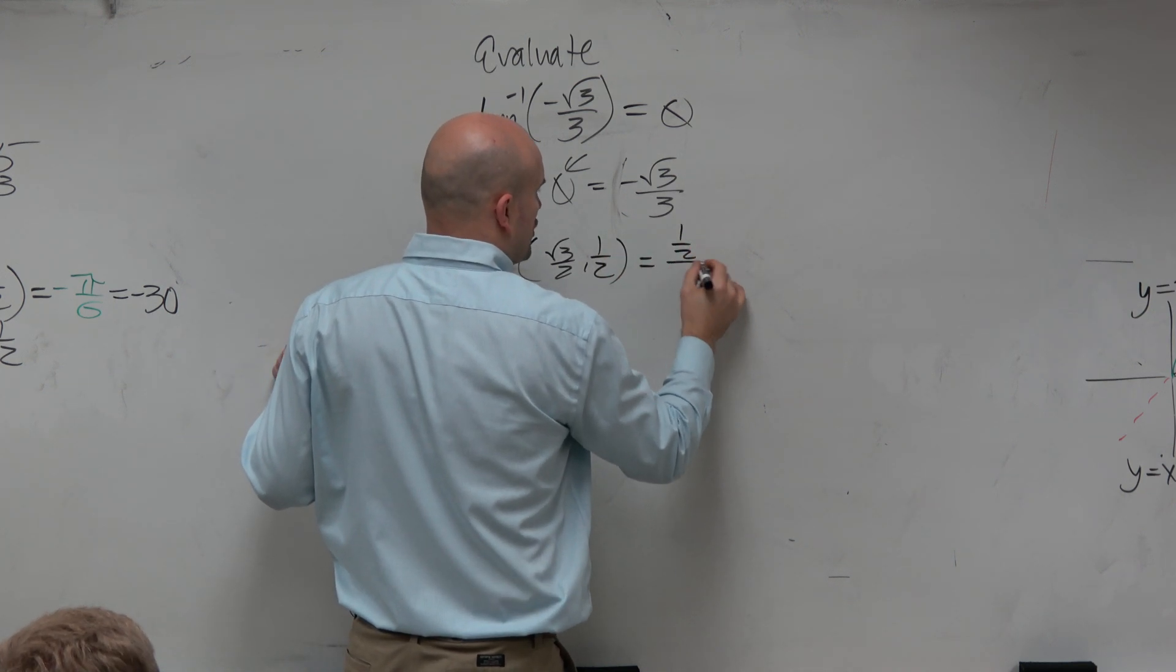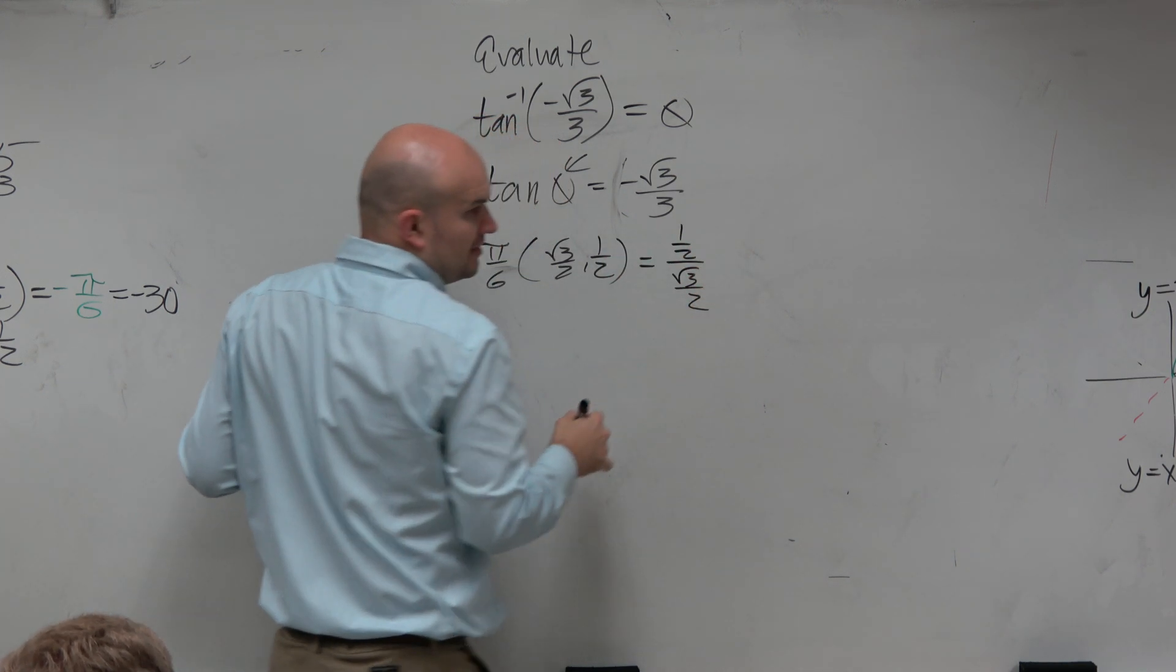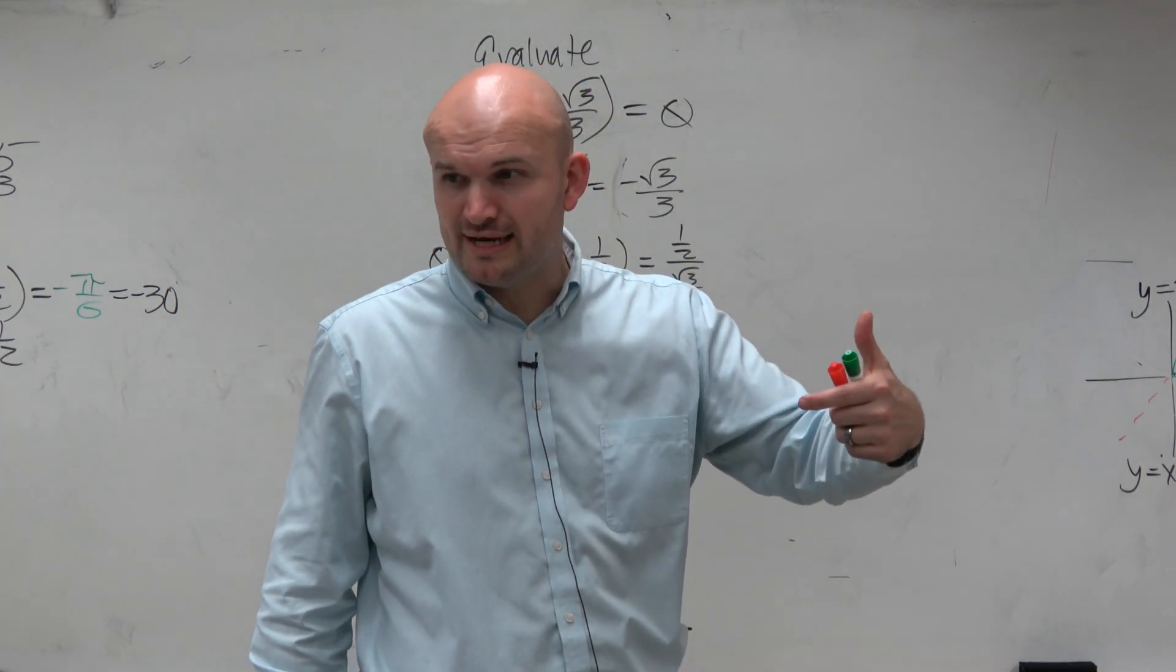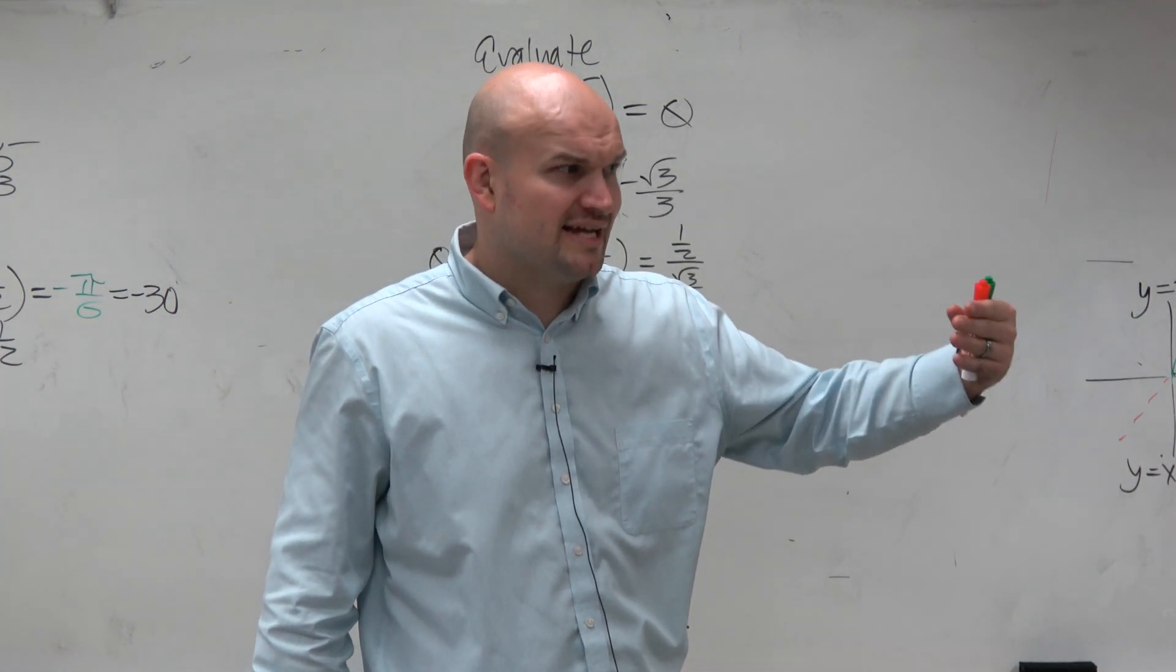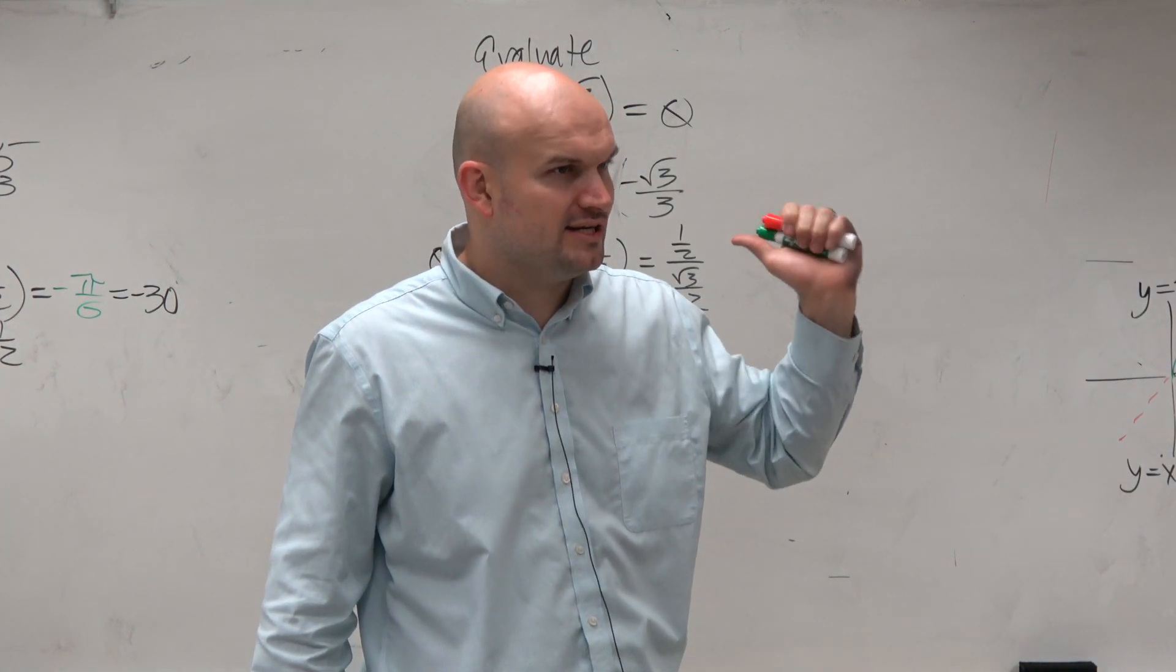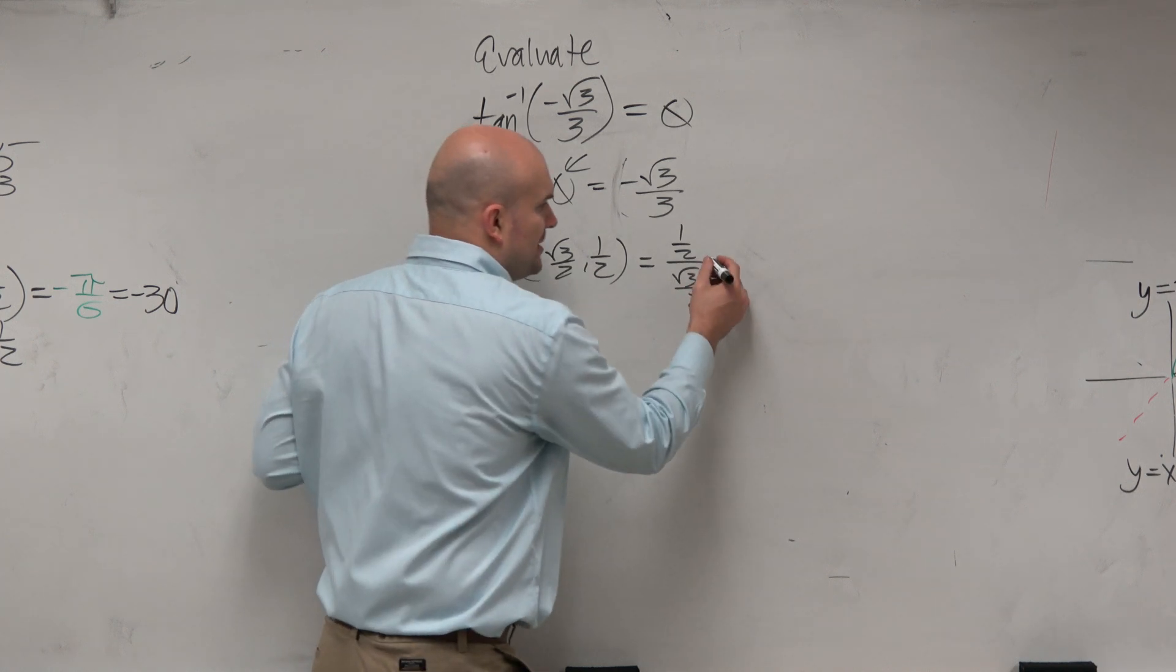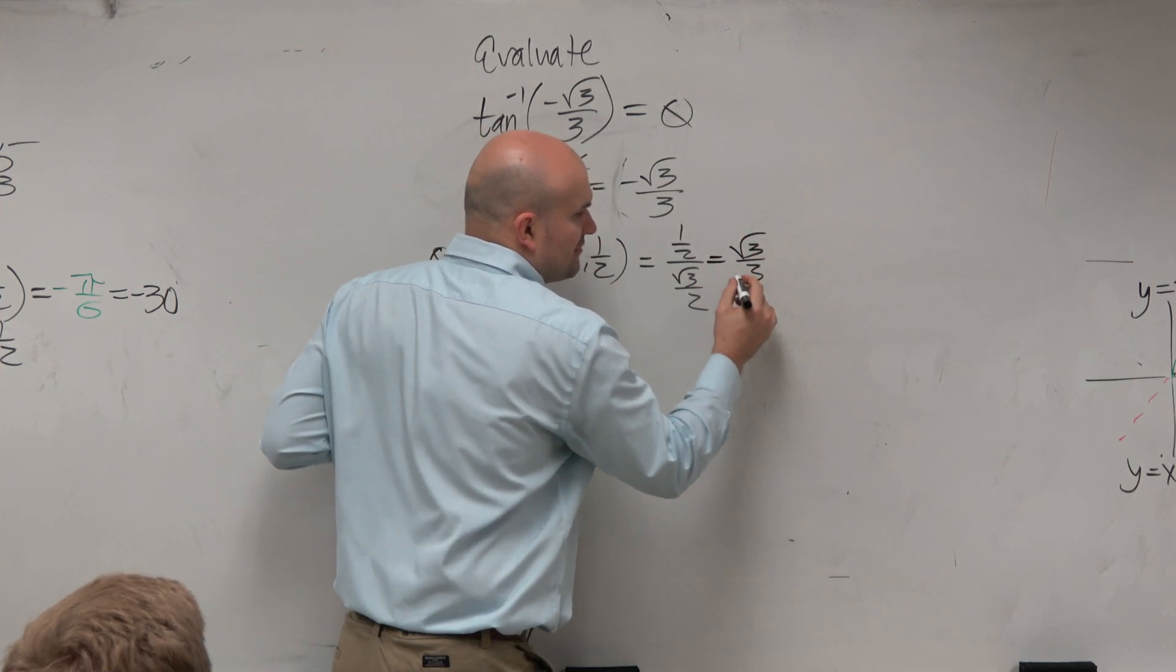And when you take the y coordinate over the x coordinate, if you guys were to simplify this like I told you to do, once you guys did that large worksheet I gave you, by the time you guys did the second example of this, you're probably like, oh, I already did this. I'm not going to multiply by the reciprocal rationalize the denominator. I already know the answer is square root of 3 over 3.